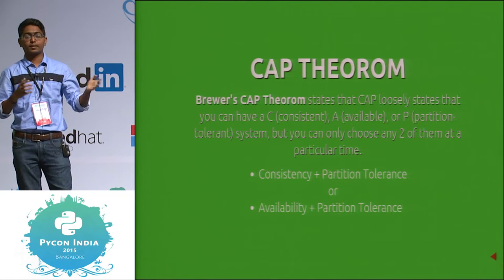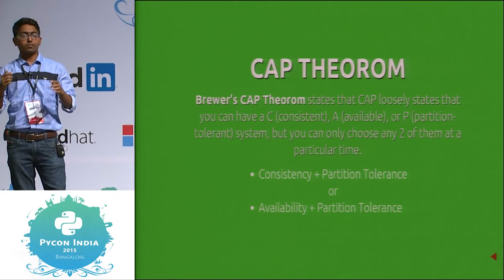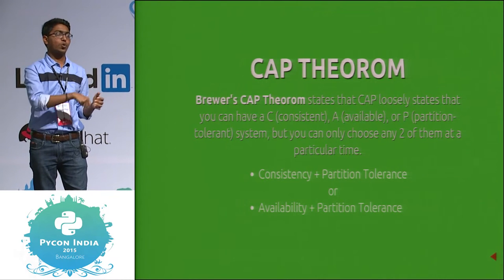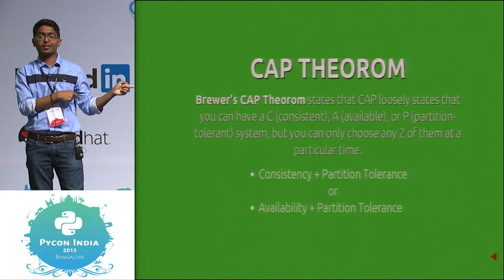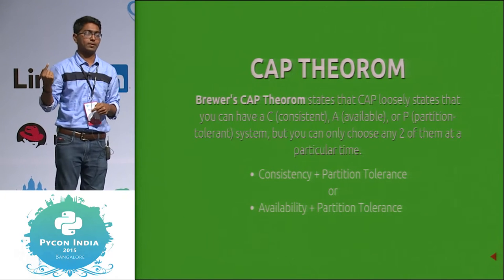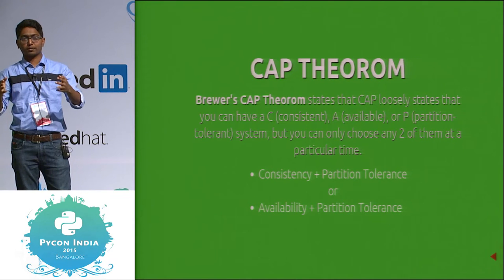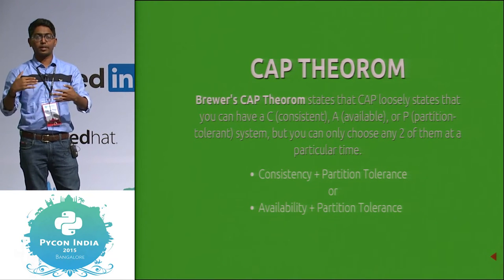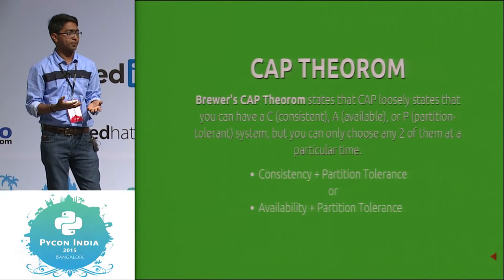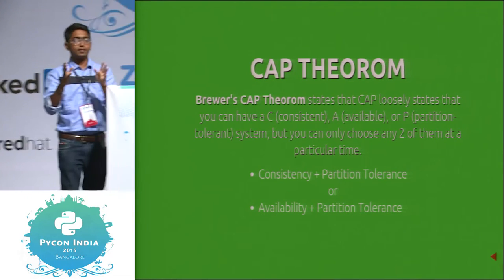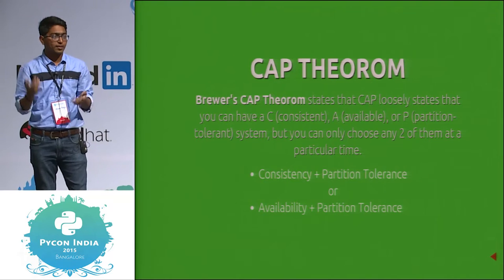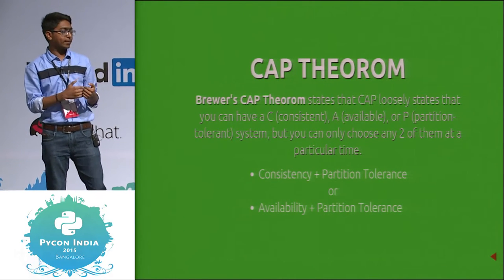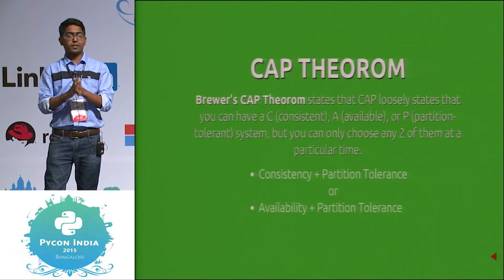Let me explain with an example. We have a database and there is a network partition. Take node C which has some data. At the same time, one person is trying to write to node D and another is reading from node C — which doesn't know about the other nodes, so it will return the old value. If you want to stop that, you need to lock the database, saying one node is in failure — let us repair it first. But then availability is not there. Similarly, if you allow the write, he will write to the dead node — other people will see different values, so consistency is lost. If availability is there, there will be no consistency, and vice versa.